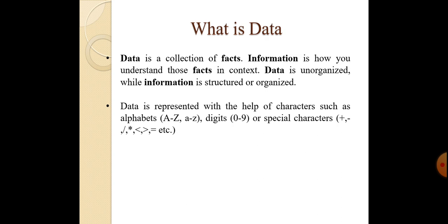The next point is data. What is data? Data is a collection of facts, and information is how you understand those facts in context. Data is unorganized while information is structured or organized. Data is a collection of facts, numbers or text. After processing data, information is created. This data can be processed by computer. Today's organizations accumulate vast and growing amounts of data in different formats. This includes operational or transactional data such as sales, cost, inventory, payroll and accounting.